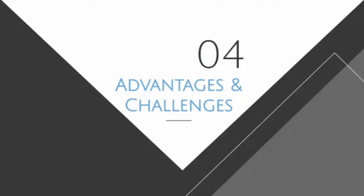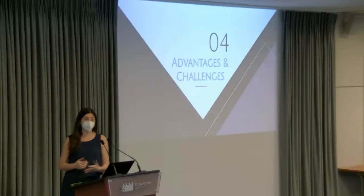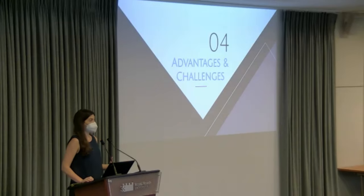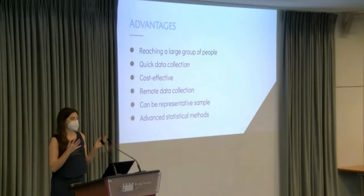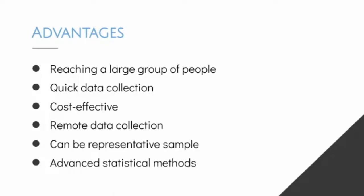Like all methods, using self-report data in surveys has its advantages and challenges. If you're looking to understand antisocial behavior online, surveys are one approach, but there are obviously advantages and disadvantages. Advantages: you're able to reach a large group of people and collect data quite quickly — certainly faster than doing interviews with 1,500 people. Relatedly, it can be quite a cost-effective method of collecting a large amount of data quickly. It can be representative, as our research is seeking to be — speaking to a larger population like the Canadian population. The data can be collected remotely, which is an advantage with the ongoing COVID-19 pandemic, and you can use advanced statistical methods like PLS-SEM.